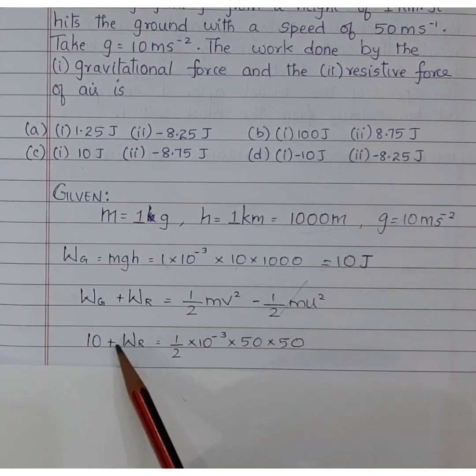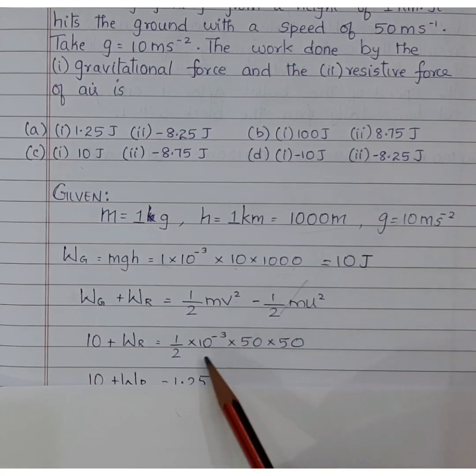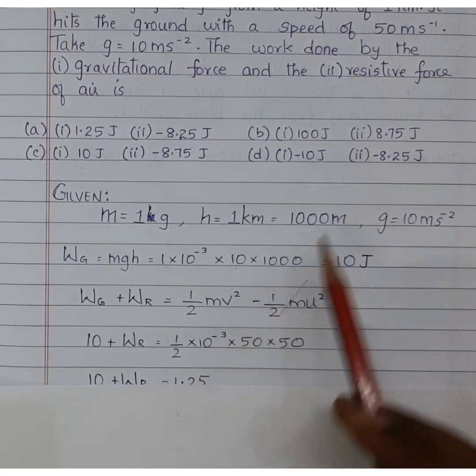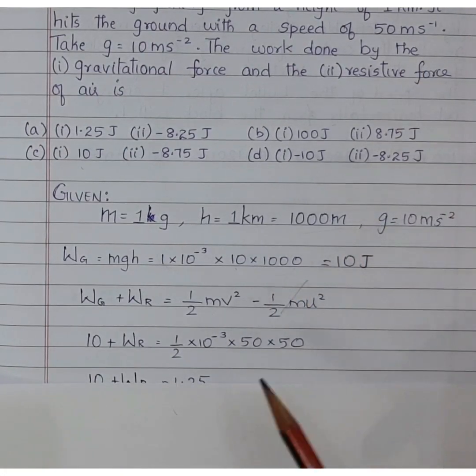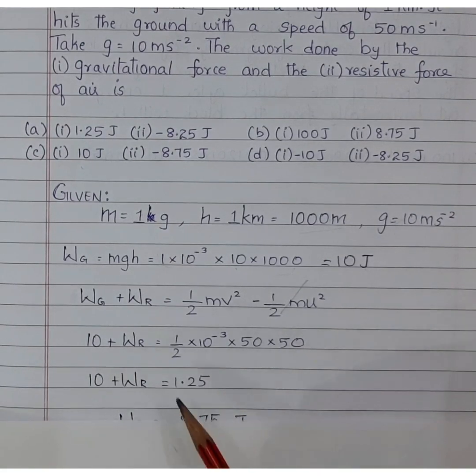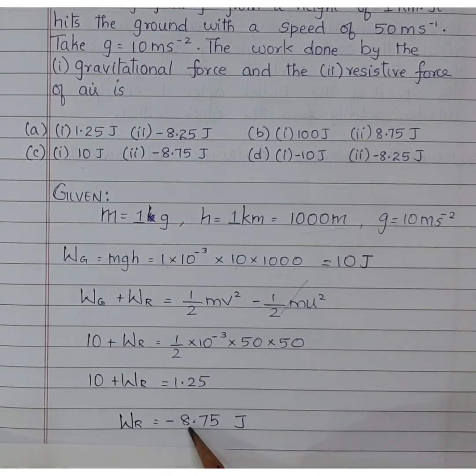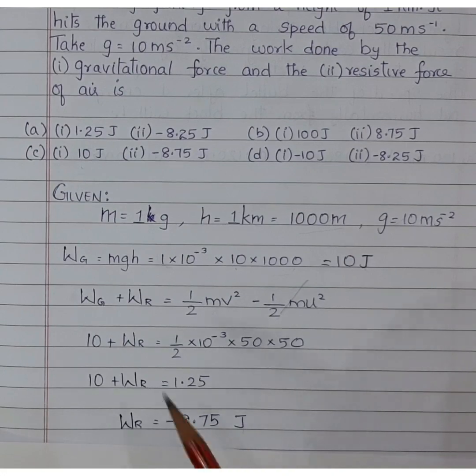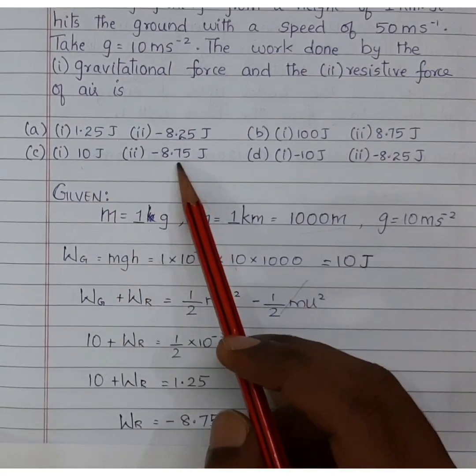Therefore, Wg that is 10 plus Wr is equal to half into mass is 10 to the power minus 3. Velocity is given as 50 meter per second. Therefore, 50 into 50. Just substitute. I will be getting Wr as minus 8.75 joules. Therefore, option C is the correct answer.